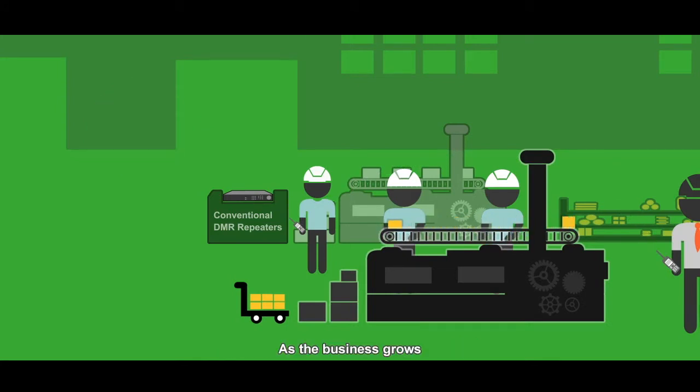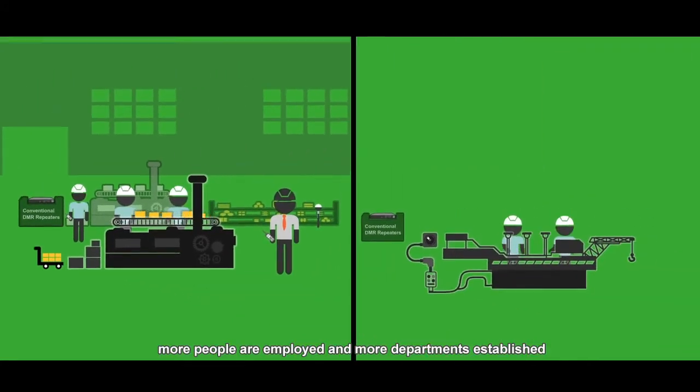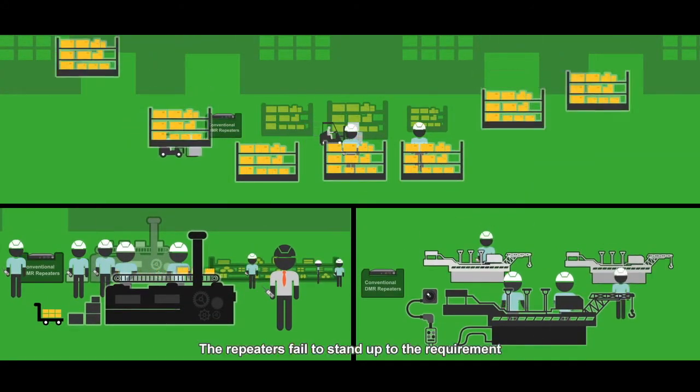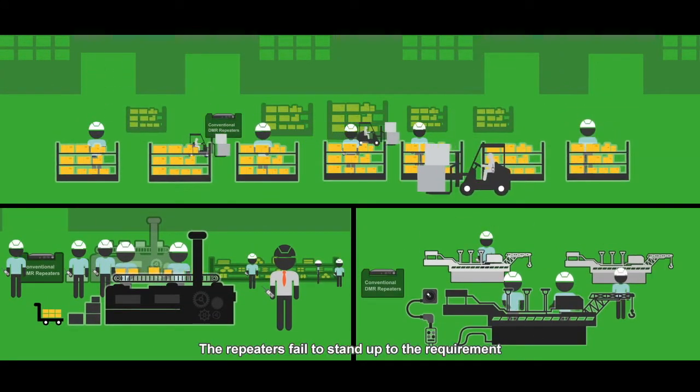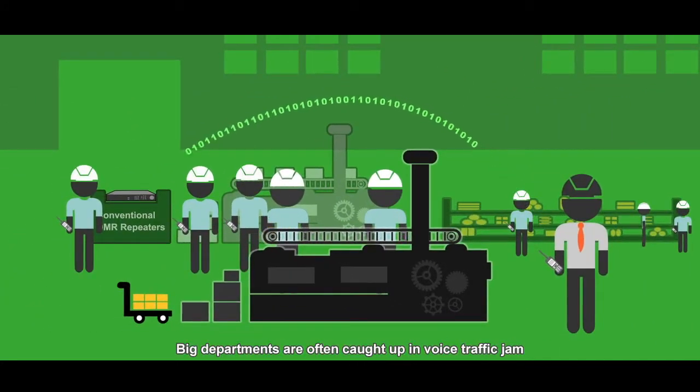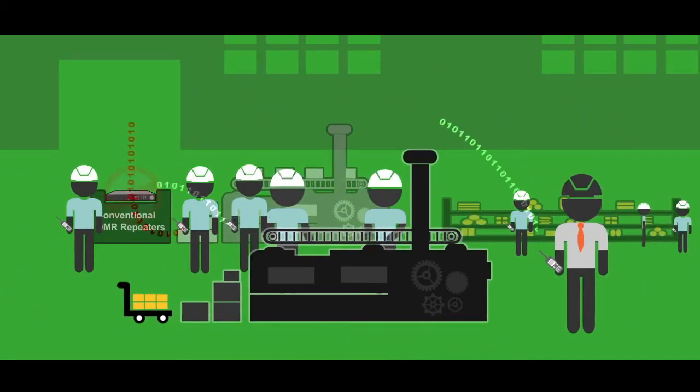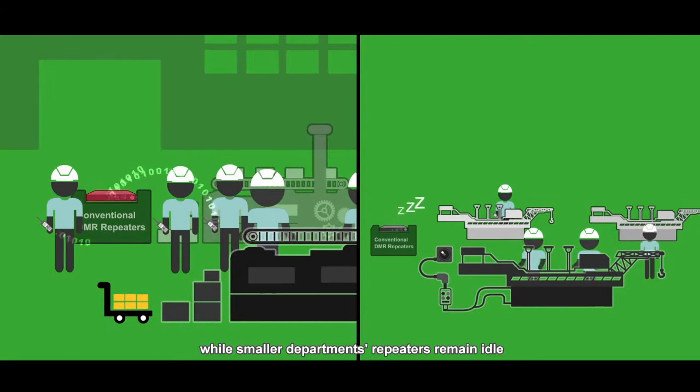As the business grows, more people are employed and more departments are established. The repeaters fail to stand up to the requirement. Big departments are often caught up in voice traffic jam, while smaller departments' repeaters remain idle.